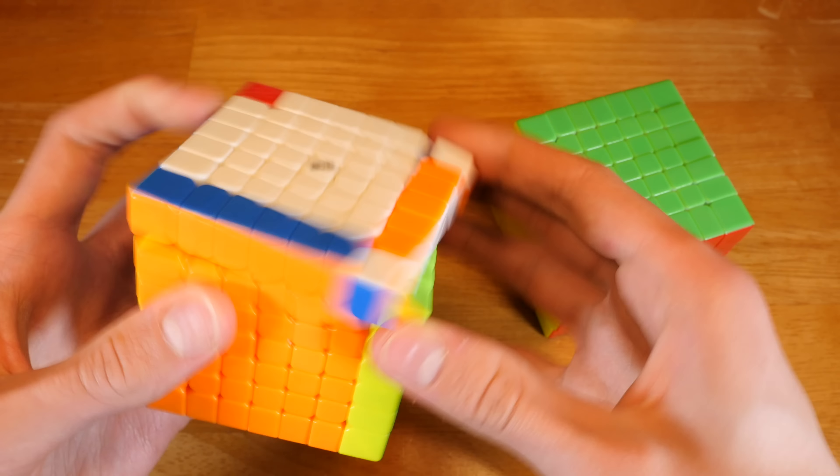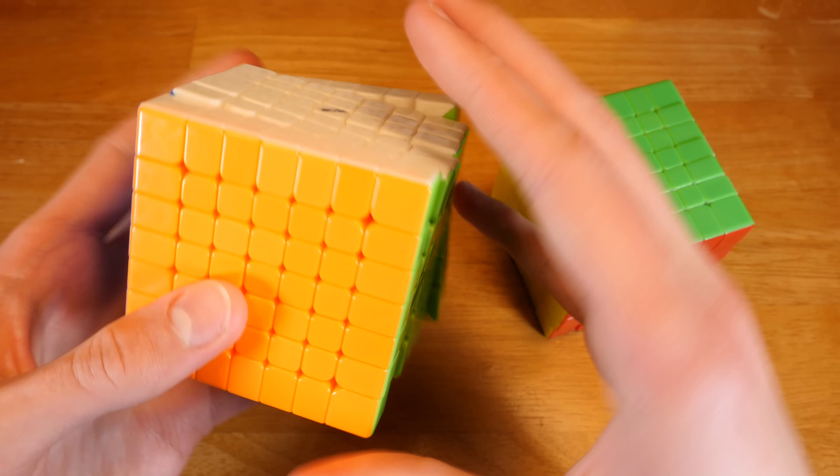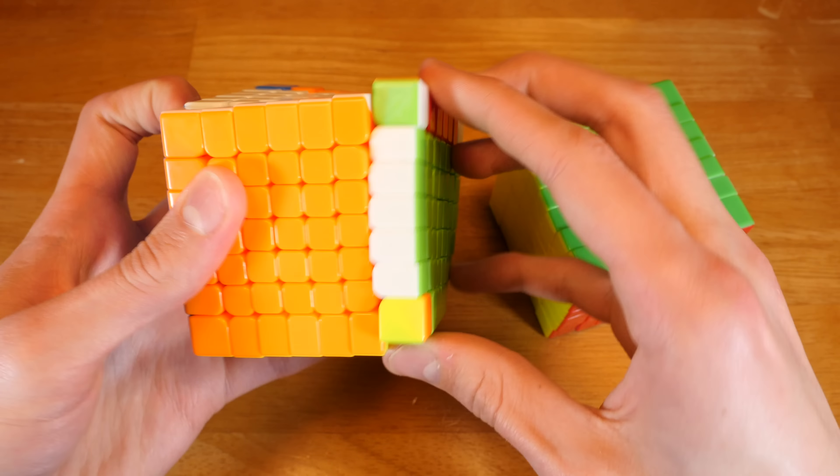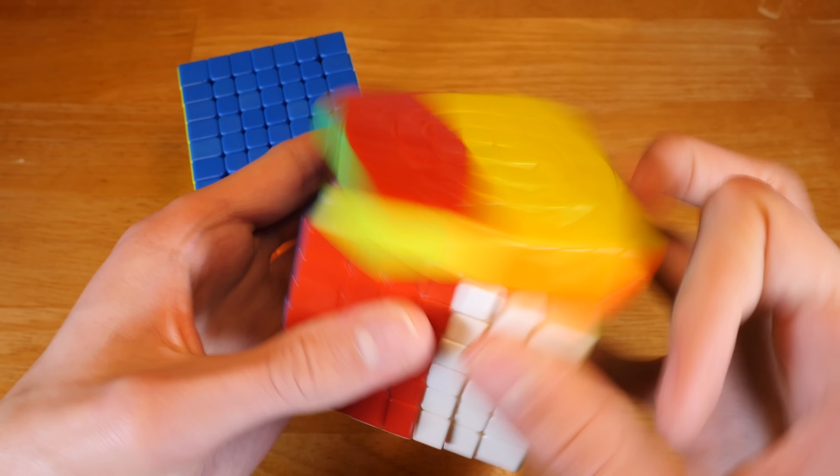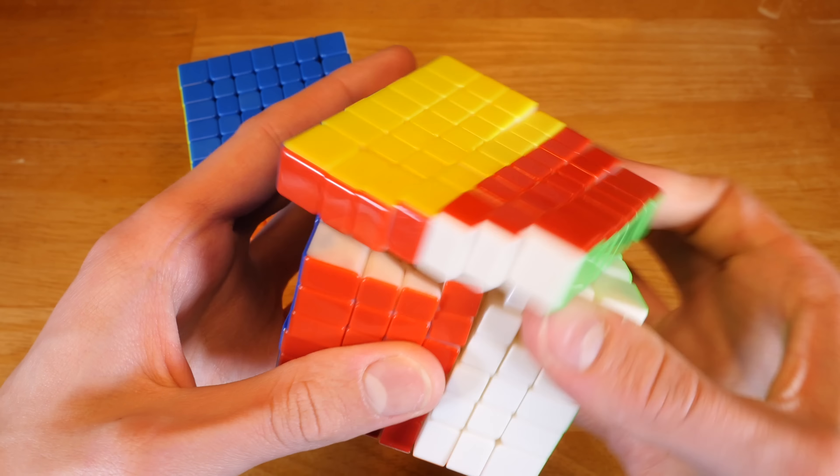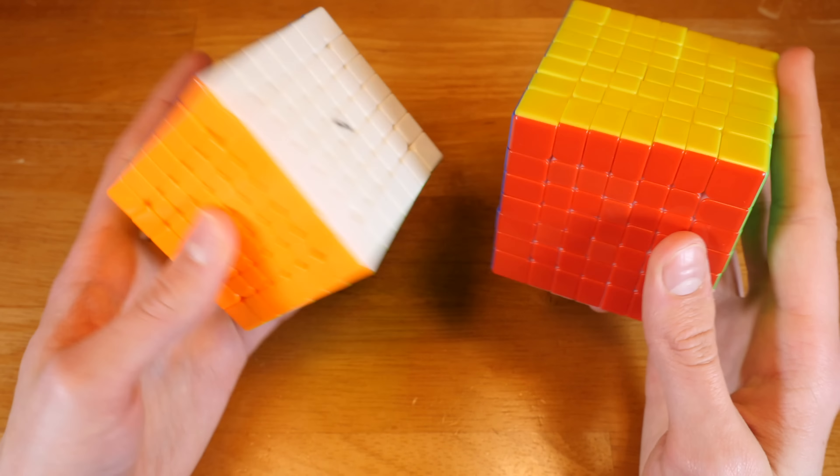But this is a very fast cube. Yuxin is also very fast but also smooth, so they do have their pros and cons.